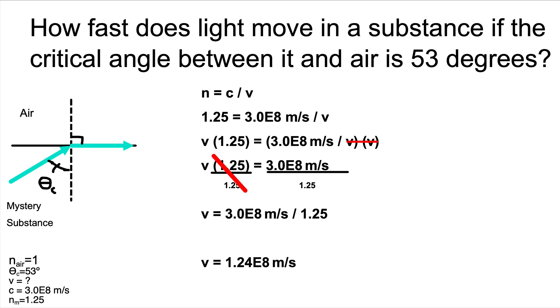The answer our calculator gives us is 1.24E8 meters per second. That can also be written as 1.24 times 10 to the eighth meters per second, or you could say it as 124 million meters per second. I hope this video helped you out.